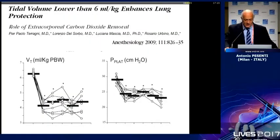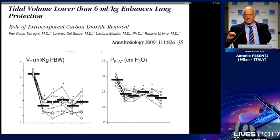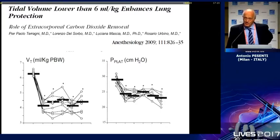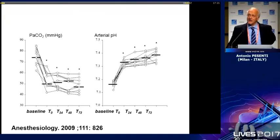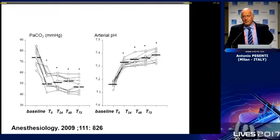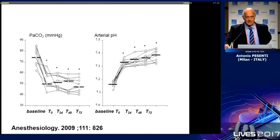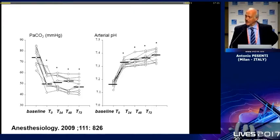Besides frequency, clinically you can also decrease tidal volume. You can decrease tidal volume, decrease plateau pressure, hence decreasing the ventilator-induced lung injury risk in any individual patient, while maintaining a normal PCO2 and a normal pH. With CO2 removal, we do not focus on blood gases — we focus on the ventilator-induced lung injury risk.